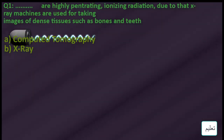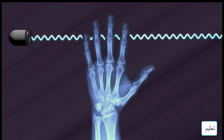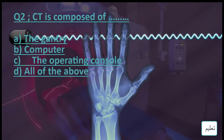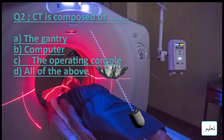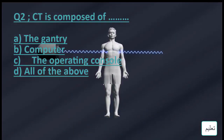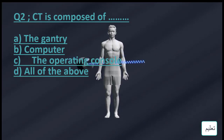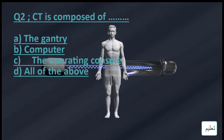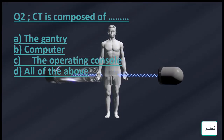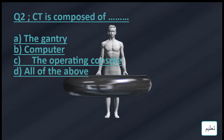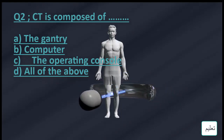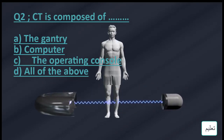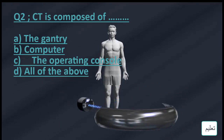A conventional x-ray uses a fixed tube that sends x-rays in only one direction, while a CT scanner uses a motorized x-ray source that shoots narrow beams of x-rays as it rotates around the patient. There are special digital x-ray detectors located directly opposite the x-ray source. As the x-rays pass through the patient, they are picked up by the detectors and transmitted to a computer.